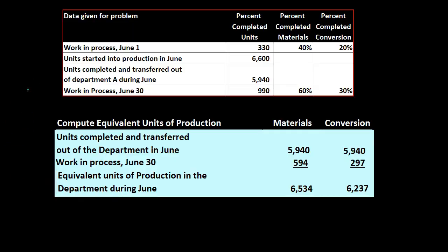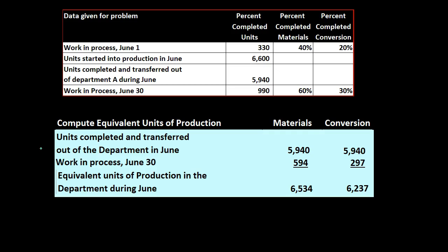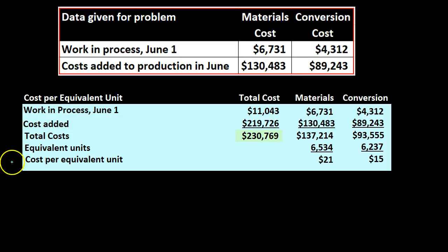Here's what we determined in prior presentations. We computed equivalent units of production — equivalent units with relation to materials and with relation to conversion. Notice this is in units, and now we need to assign the dollar amount to them. We have units completed and transferred out in June: 5,940 for both materials and conversion, and work in process for June being 594 and 297, giving us the totals.